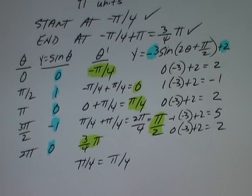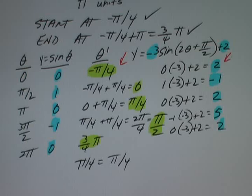So our new y-values are 2, -1, 2, 5, and 2, corresponding to theta values of -π/4, 0, π/4, π/2, and 3π/4. These are the values we're going to use to graph our transformation.